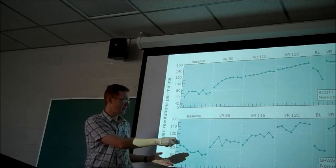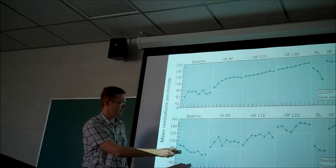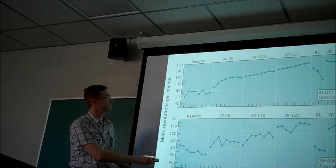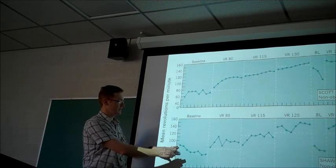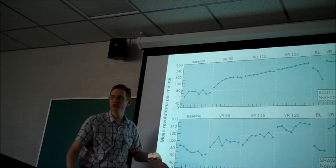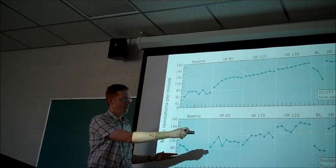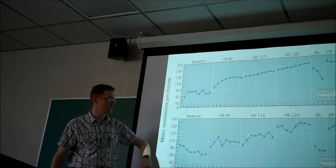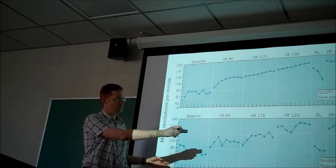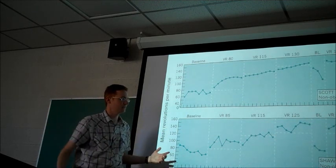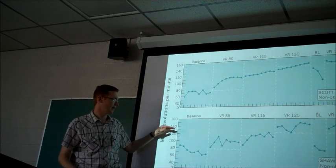You see a very similar pattern for the second participant. There's a slight difference in the initial treatment because of the difference in the baseline — this person started off pedaling a little bit harder, more RPMs, and so they had a higher criterion. This is called the changing criterion design because participants have to reach these different levels in order to get a reward. The criterion for getting a reward increases with time and with the performance of the participant, so they just get more and more fit, reaching a higher and higher intensity.